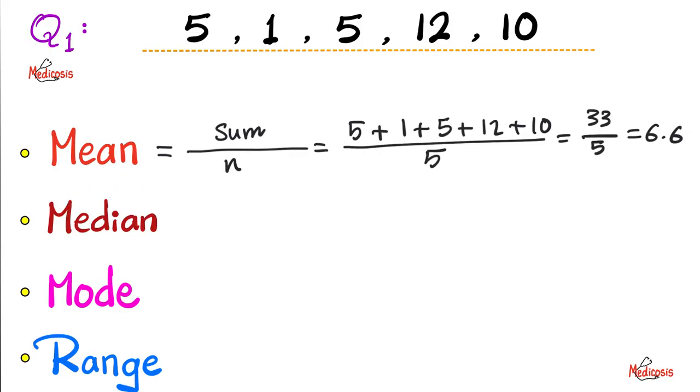The median is in the middle. And to get the median, first you need to arrange these numbers from the smallest to the largest. So, 1, 5, 5, then 10, and then 12.